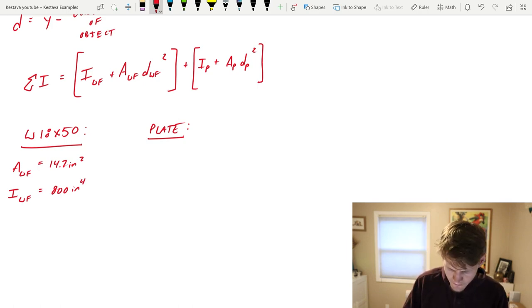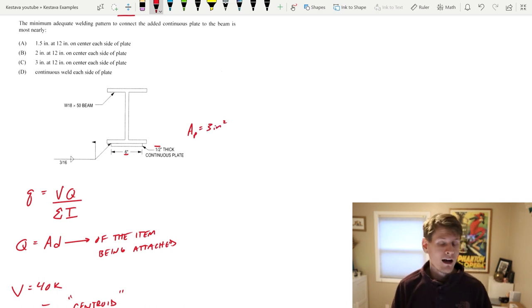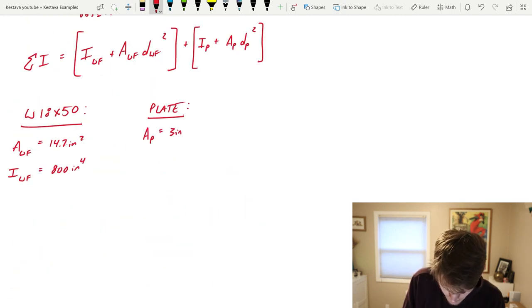Now what about our plate? We scroll back up. Our plate is six inches and one half inch thick. So that's an area of the plate just six times 0.5 is three inches squared. Not a whole lot, but you're going to see as you start attaching objects that are far from the centroid of the system, they can be really beneficial even though it's not a lot of material.